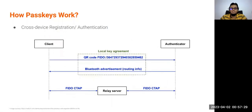In cross-device authentication or registration, the Passkey flow involves a QR code. The client application or web browser first generates a QR code containing a URL that encodes a pair of encryption keys. The QR code is scanned using the authenticator, and upon successful completion, a Bluetooth advertisement containing routing information for a network relay server is created. This produces end-to-end encrypted key agreement between the client and the authenticator. Both the client and authenticator then connect to the relay server and perform standard FIDO client-authenticator operations.